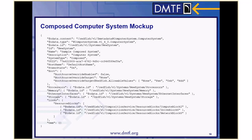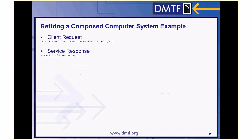When a client performs a GET on the composed computer system resource, the response looks just like any other computer system resource. A client can traverse the different device collections such as processors, memory, Ethernet interfaces, and storage collections just like any other computer system. Note that the system type property is set to "composed" to indicate this is a composed computer system. The links object also contains links to the resource blocks that this composed computer system is consuming. When a client no longer needs the composed computer system, it can send a DELETE request. The service responded with 204 No Content to indicate success, and the resource blocks that made up the composed system are now free for future compositions.